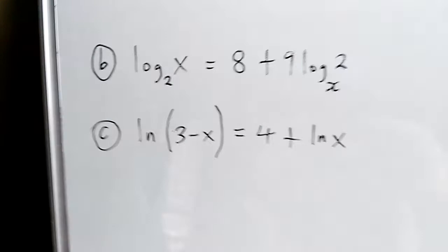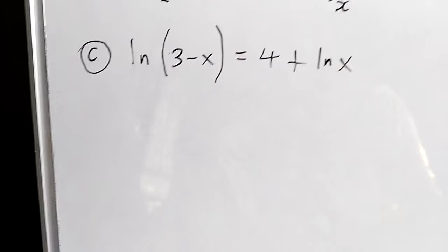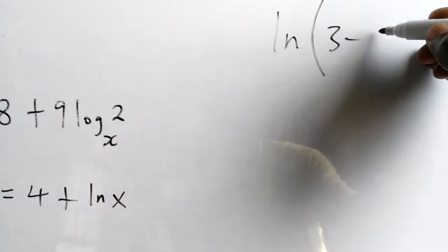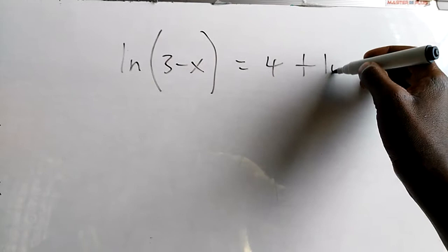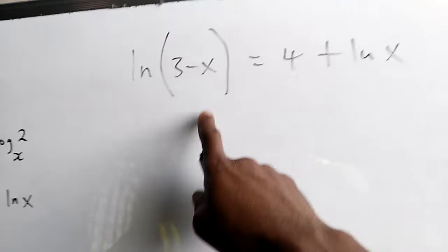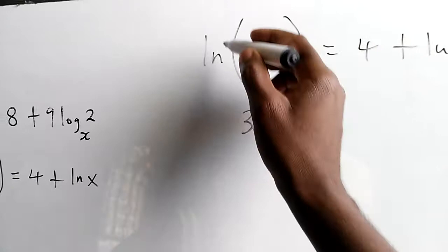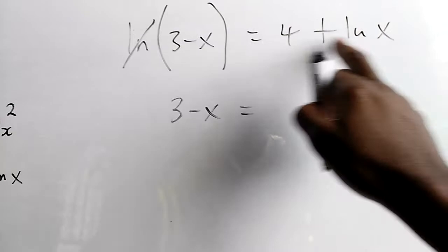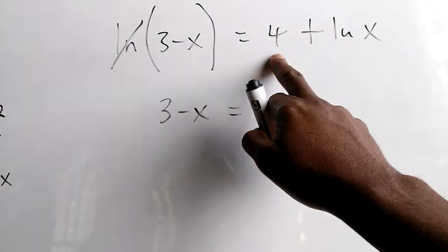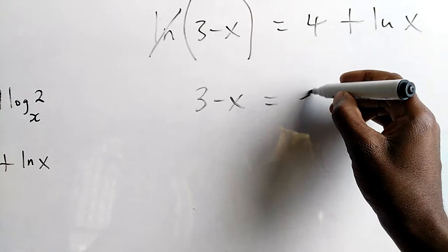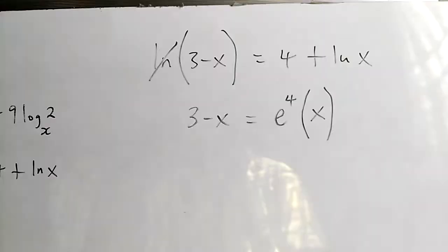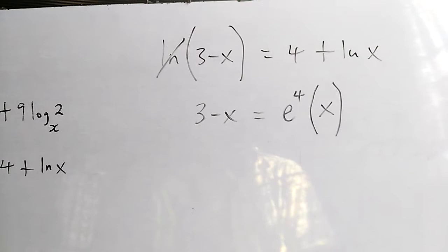The last part we can solve. And then we come to change of base. C: you have ln, open brackets, 3 take away x, you close, equal to 4 ln of x. And so you bring the anti-log of ln, meaning e to the x. That will go. There was multiplication here for the log to find itself in addition form. We are multiplying 4 by the e of x of that. So we'll say e to the 4 is multiplying x. And then 3 take away x is equal to e to the 4, then we'll have an x there.